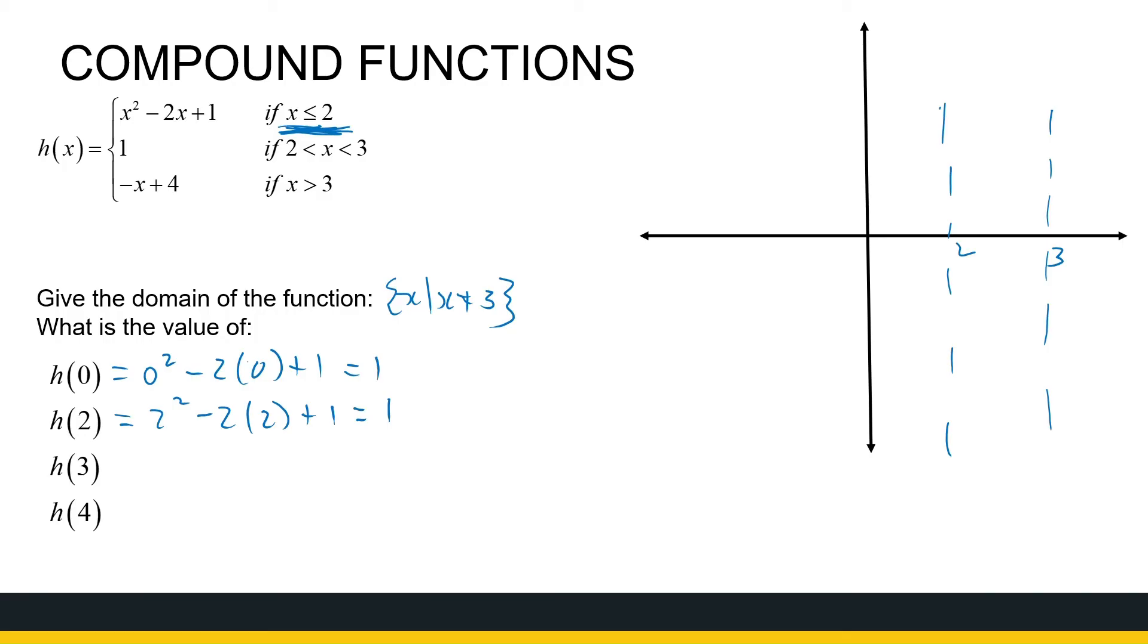H of 3. That's undefined. H of 4 will fall into the last interval where x is equal to 4. So I've got minus 4 plus 4, which is 0.